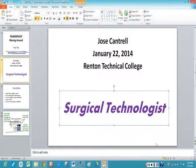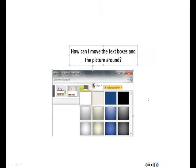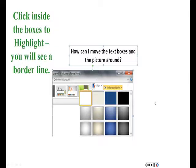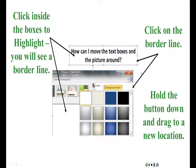Time for our review. There's my content information. How can I move the text boxes and the picture around? So I click inside the boxes to highlight, and you will see a border line. Then I click on the border line, I hold the button down, and drag it to a new location. Good job.